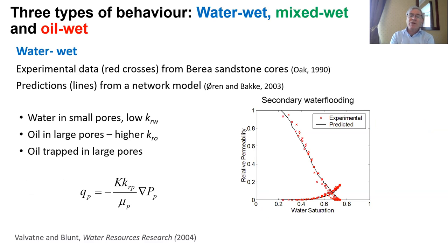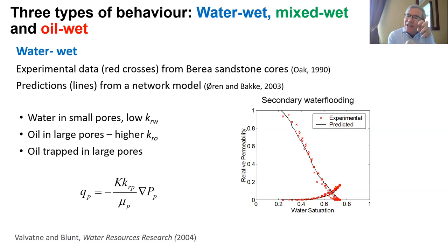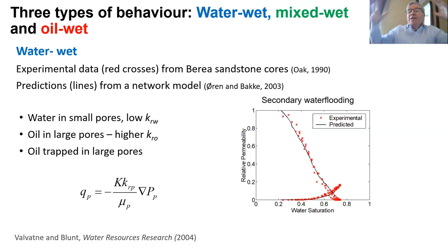There are three types of behaviour we're going to discuss: water wet, mixed wet, and oil wet. We'll start with the base case, which is water wet. This dry piece of sandstone is made of quartz and is naturally water wet — it likes water, which will soak into it spontaneously. Water likes the solid surface and can interact with it. Oil, in contrast, does not interact with the solid — it wants to stay away from the surface, preferring the big pores. Water wants to be in the narrow restrictions and nooks and crannies of the pore space.